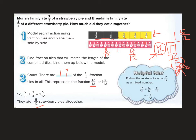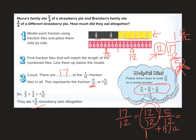So they ate one and five twelfths strawberry pies all together. We could also do this way where I take 17 twelfths is the same as saying 12 twelfths plus five twelfths. This is the same as one plus five twelfths, so I have one and five twelfths. I'm just reiterating this piece right here.